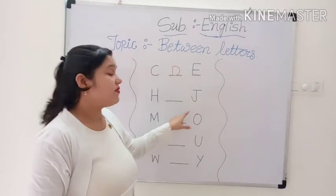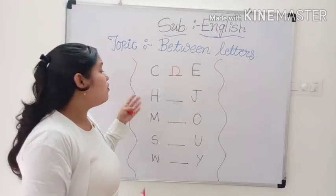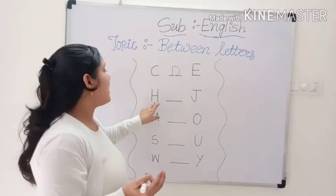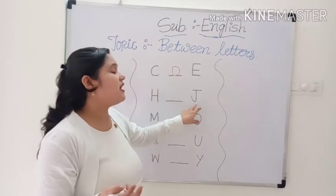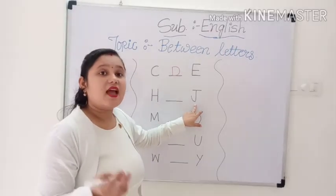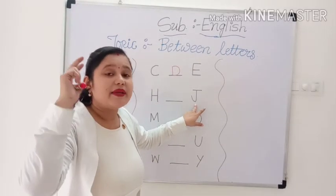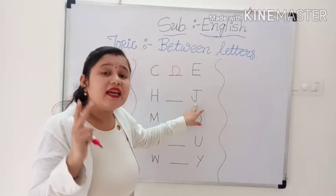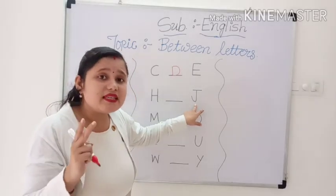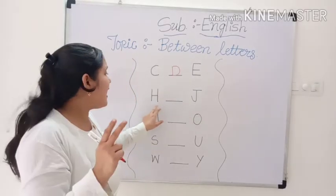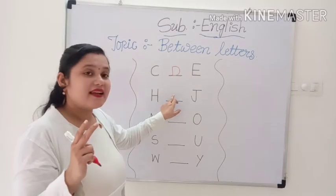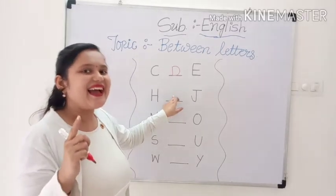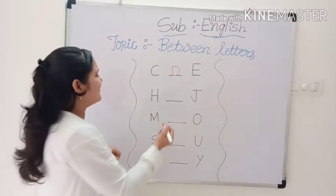Now, which letter comes between H and J? H, I, J — which letter comes between H and J? Very good. I.